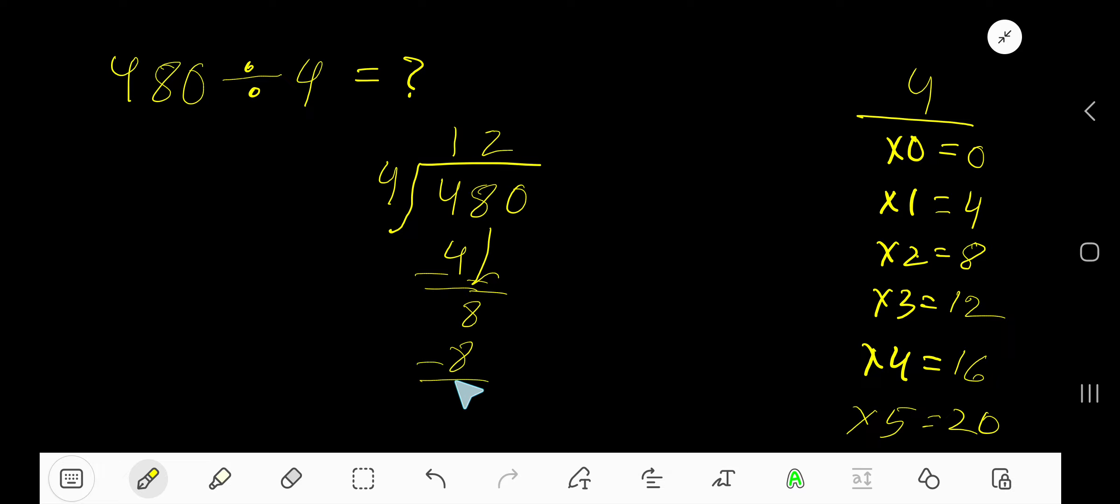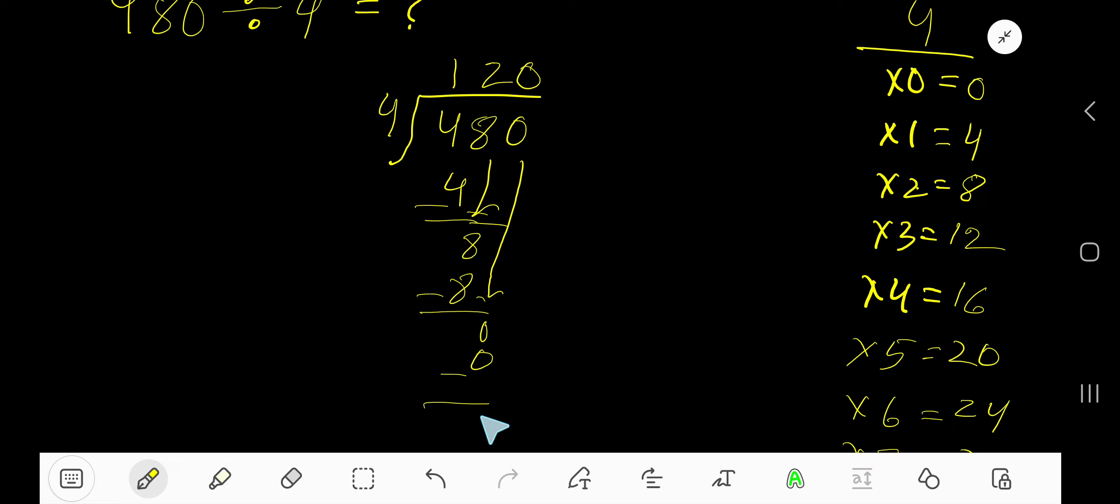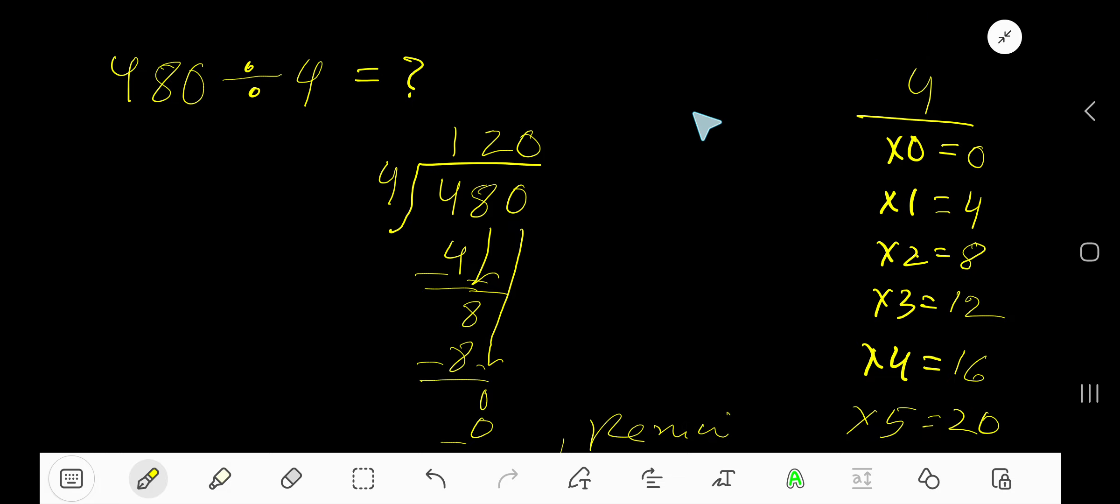Bring down the 0. 4 goes into 0 how many times? 0 times. 0 times 4 is 0, subtract. Your remainder is 0. So our answer is 120.